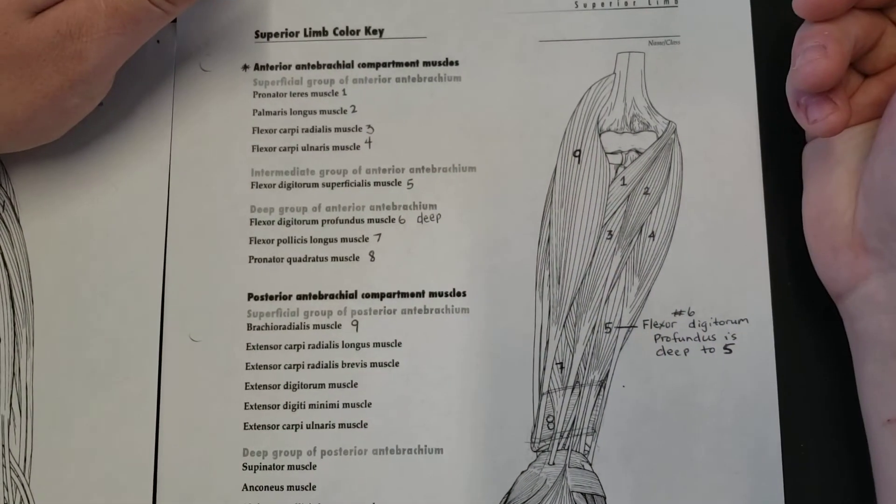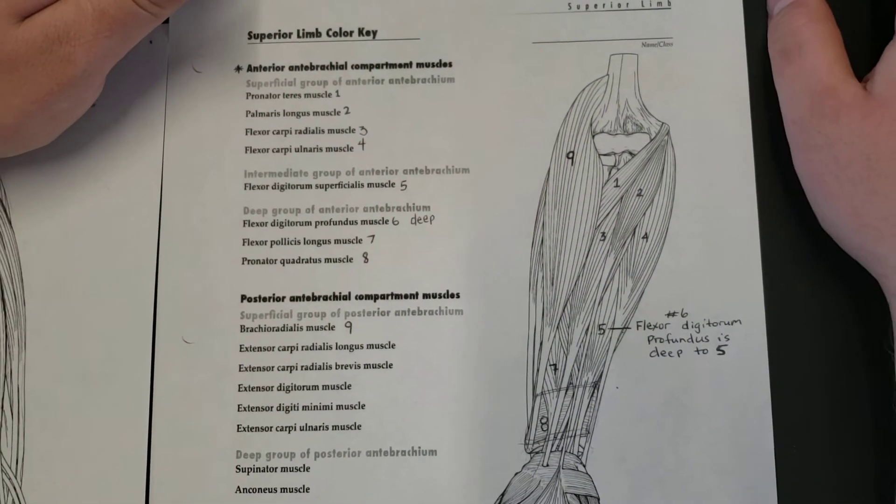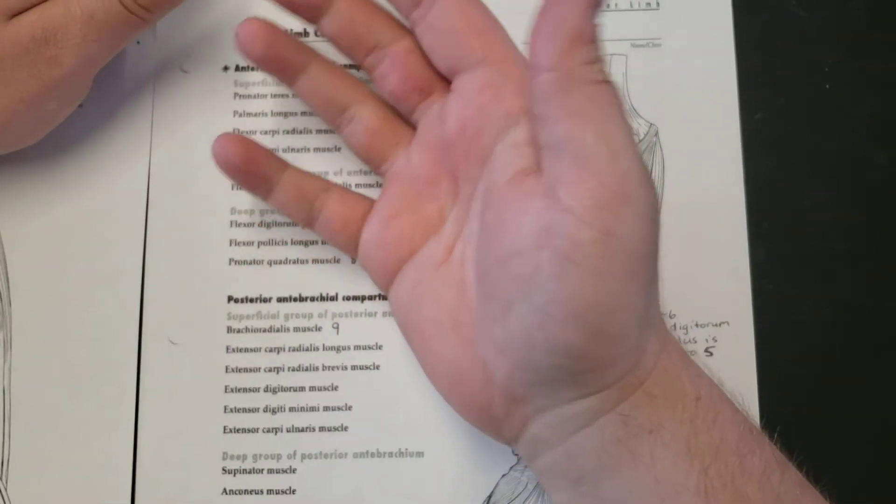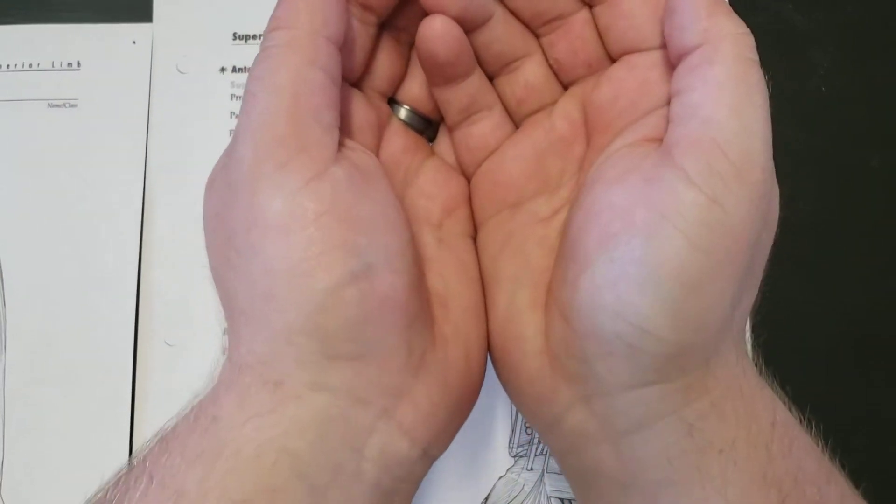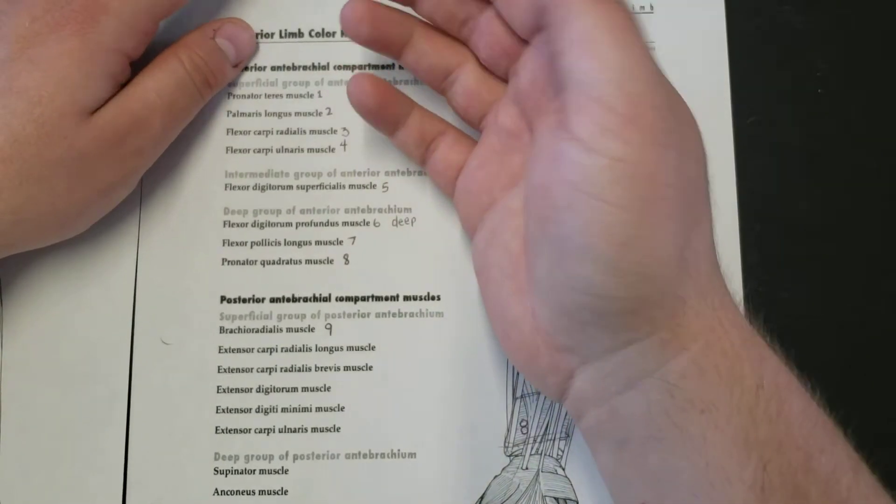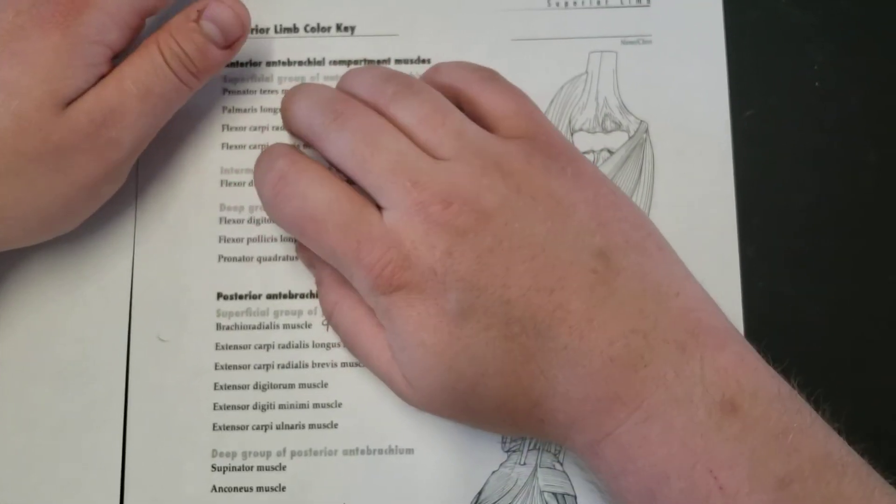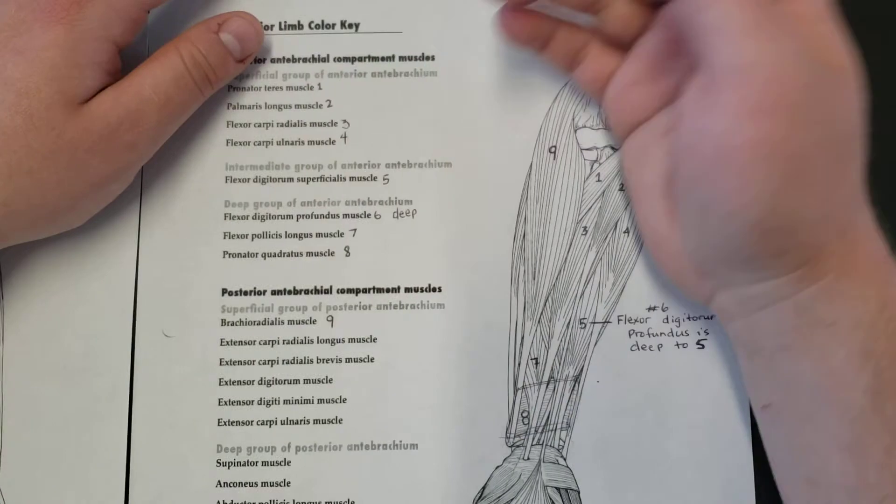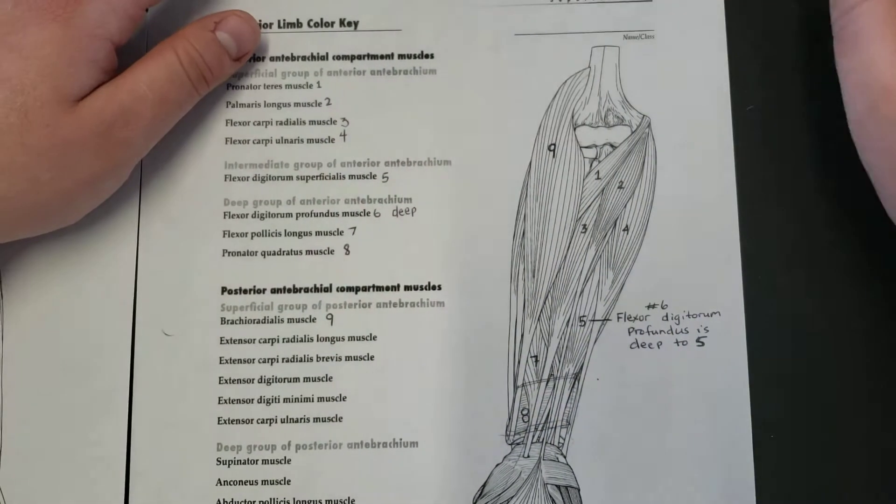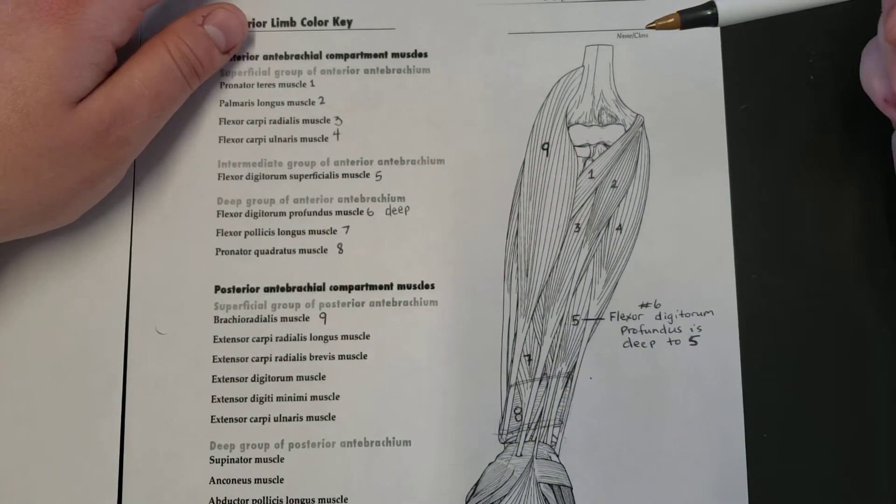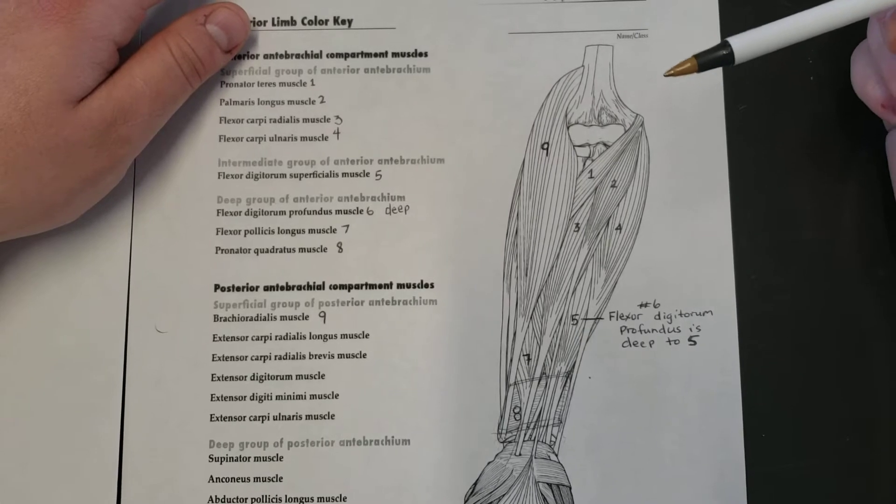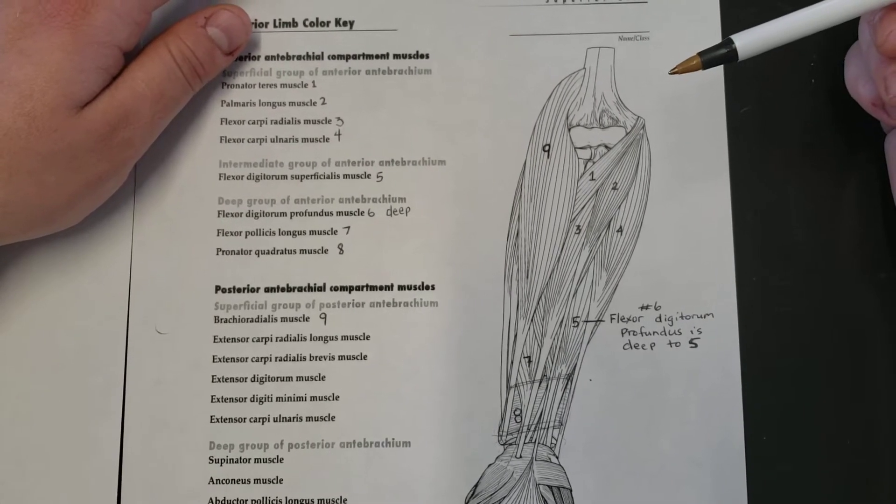Pronator is the action—it pronates the wrist. When we're talking about supination, remember supination is where you can hold soup, pronation is where you drop your soup. I don't know, maybe there's a better way to memorize that, but basically it's flipping the wrist down and that's what pronating means.